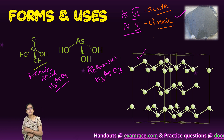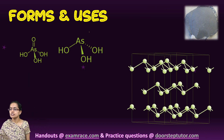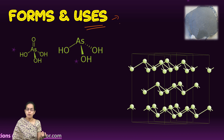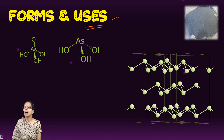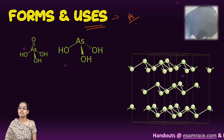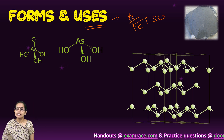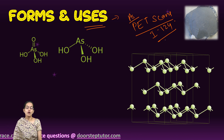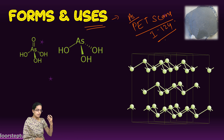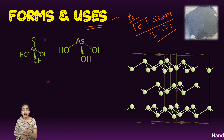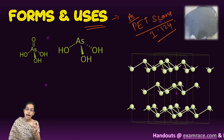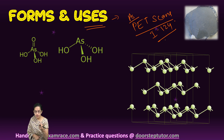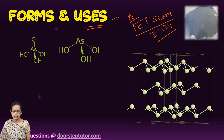Arsenic has numerous unique uses. Samples preserved for taxonomy purposes in labs are preserved using arsenic. In PET scans, much clearer images are obtained from arsenic compared to iodine-124. Arsenic also finds use in glass manufacturing, pigments, adhesives, the tanning industry, food additives, feed processing, and the pharmaceutical industry.